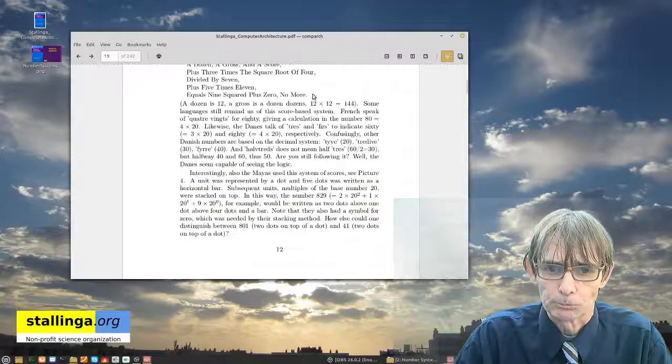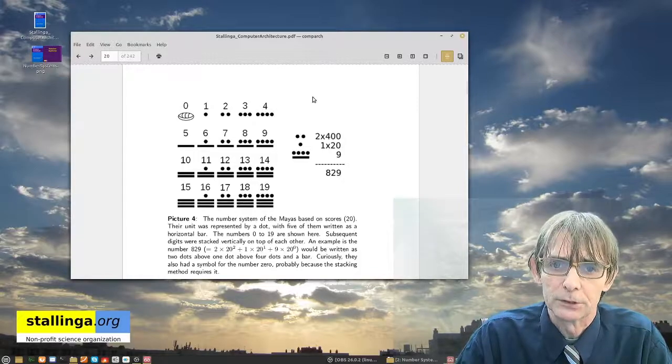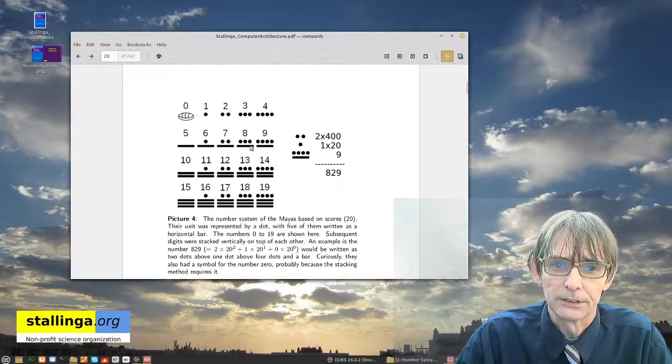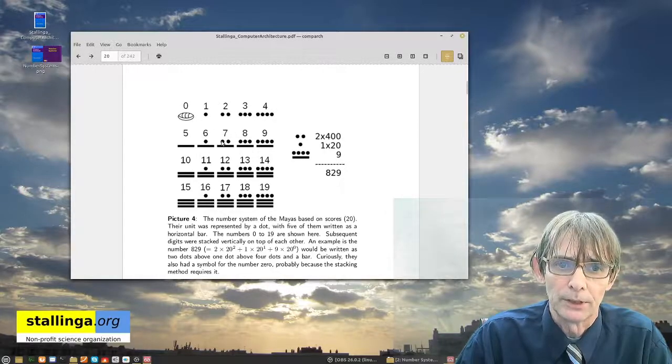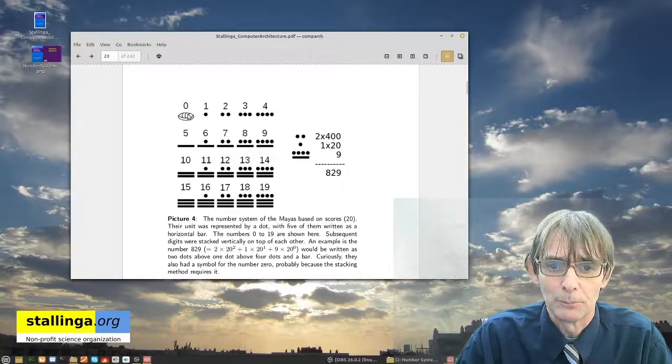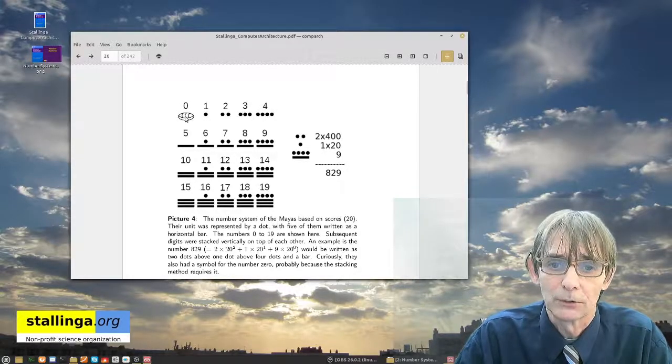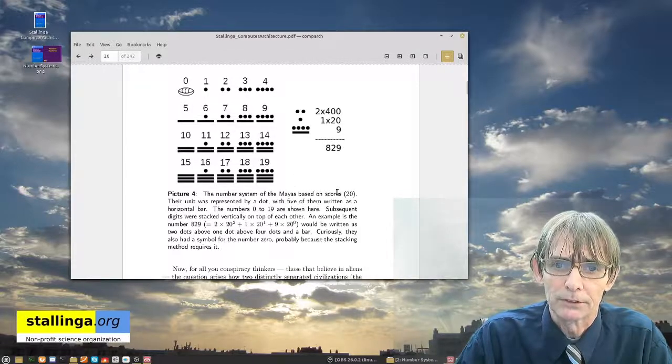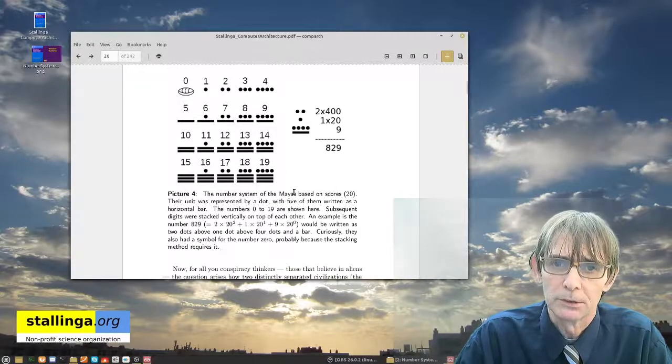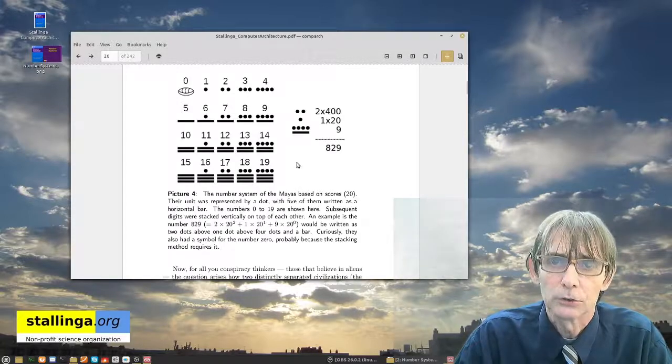So the other thing that was used in the world is the system based on twenty. For instance, as I show here, the Mayans use this system based on twenty. And they actually are one of the first, or maybe the first, that used a value, a symbol for zero. Others didn't even know the concept of zero. And this system actually is quite widespread. It is the Mayans on one side of the Atlantic, but also in Europe it is also used.